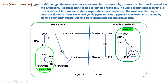The third variant is the PCK type. Here, oxaloacetate is converted into aspartate by aspartate aminotransferase within the cytoplasm. Aspartate is translocated to the bundle sheath cell, where it is converted back into oxaloacetate by aspartate aminotransferase. The oxaloacetate may be decarboxylated to form PEP, which yields pyruvate. Pyruvate is then converted into alanine by alanine aminotransferase, and alanine diffuses back into the mesophyll cells.